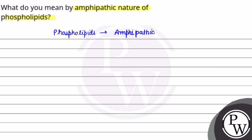If we literally create a structure, it will be something like this. This is the head and this is the tail. The green part is the tail. This is the tail. This is the head.